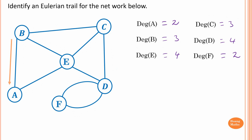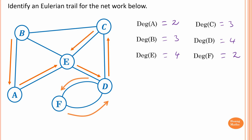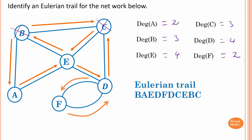Or, I can start at B and go to I. From I I go to E. From E to D. From D I go to F. Then from F back to D. From D I travel to C. From C to E. From E to B. And from B I go to C, and finish there. So I start at B and end at C — different vertices — and I pass through every edge once. So this is an Eulerian trail.